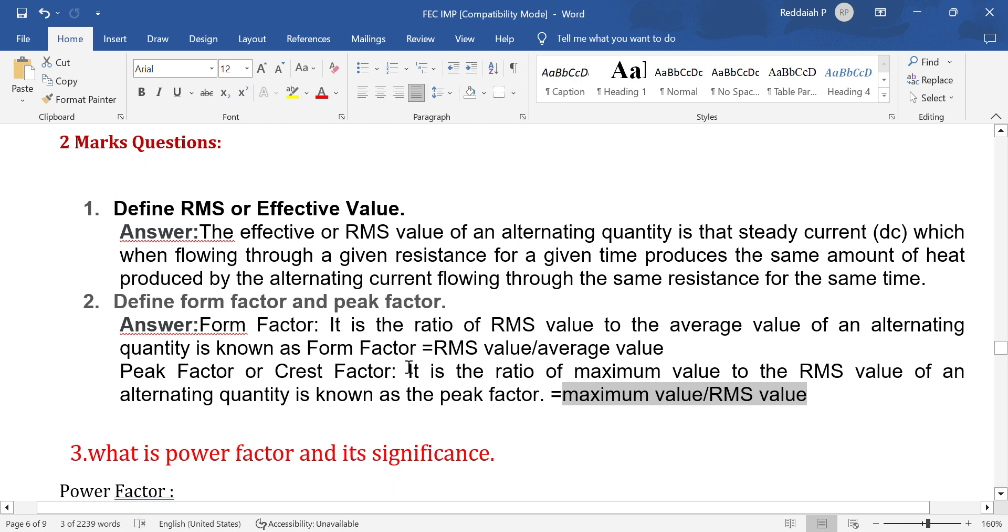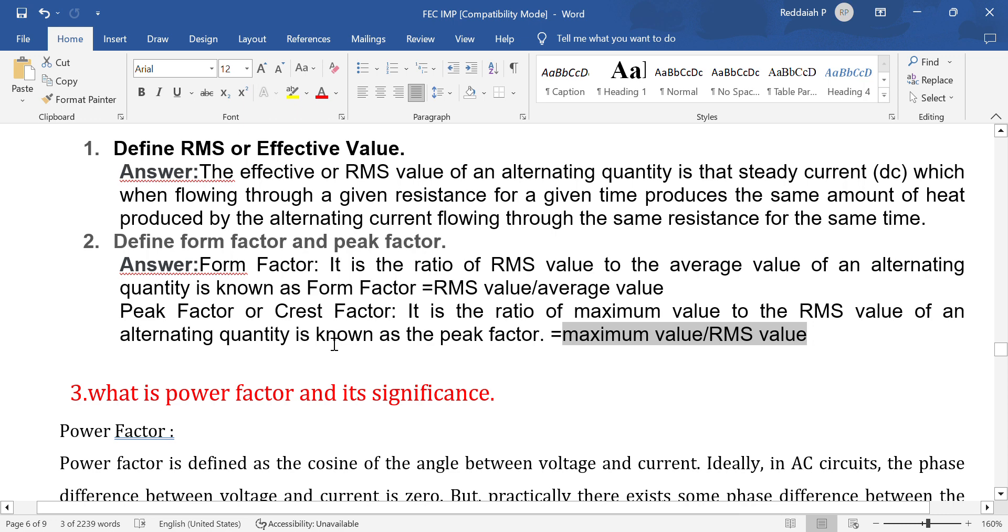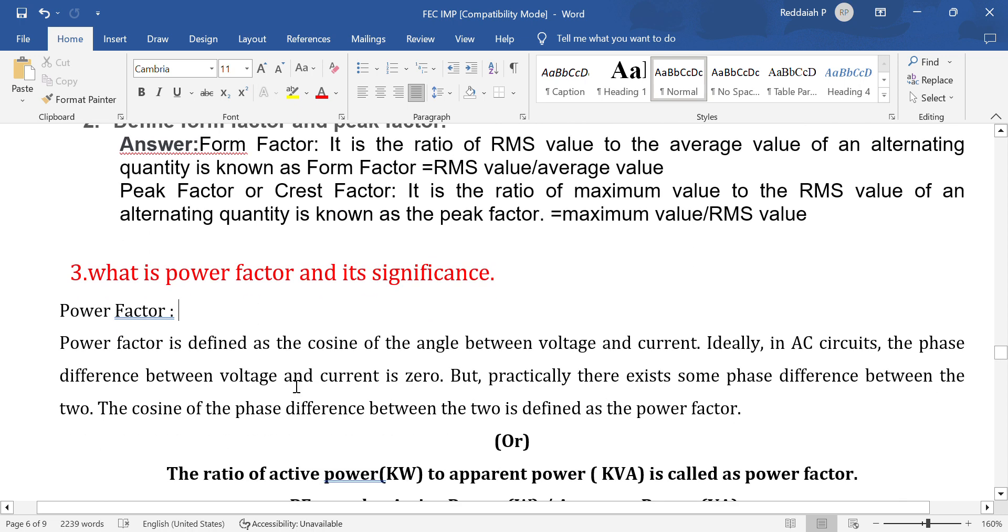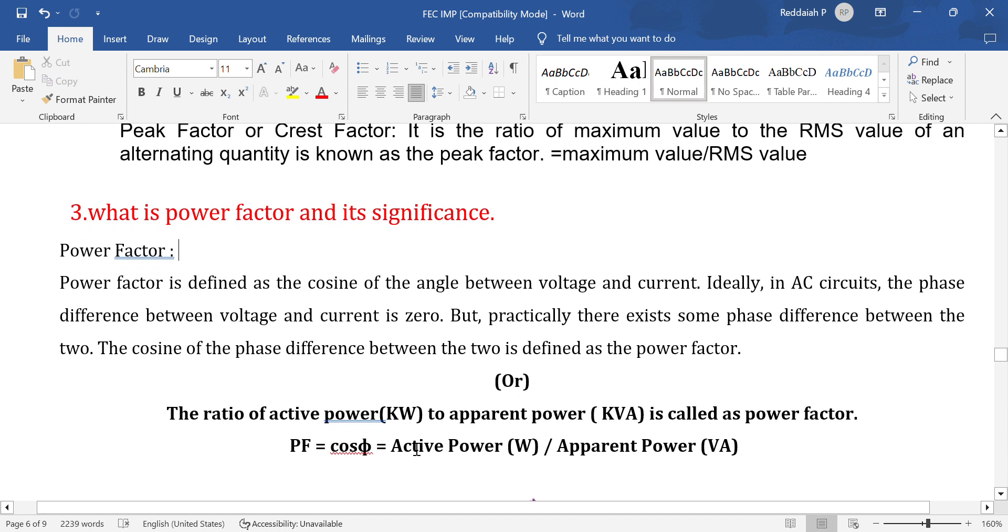What is power factor and its significance? This is very important. Power factor is the cosine of the angle between voltage and current, or we can say it is the ratio of active power VI cos phi to apparent power VI. If you make the ratio VI cos phi divided by VI, you will get power factor. It is the ratio, or we can define it as resistance to impedance. This ratio is called power factor.